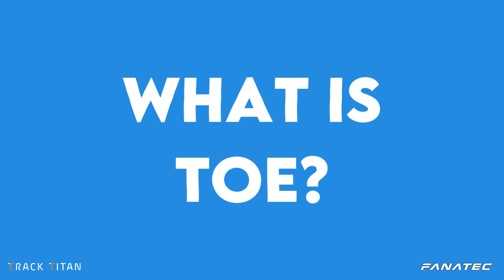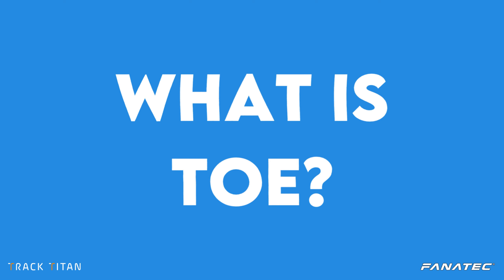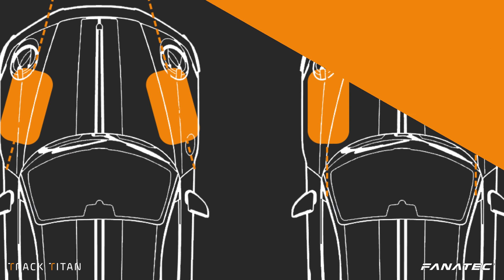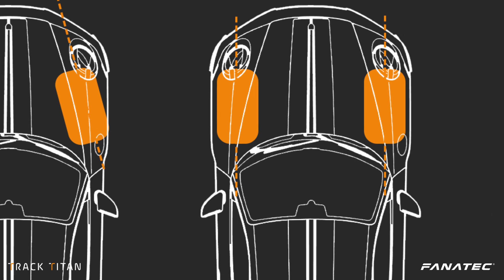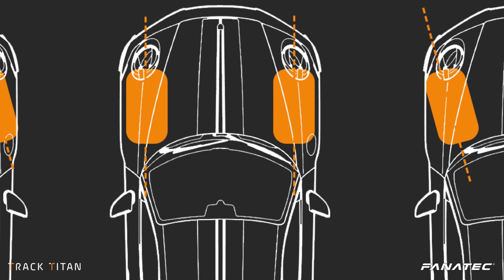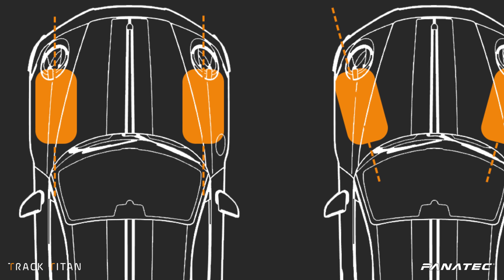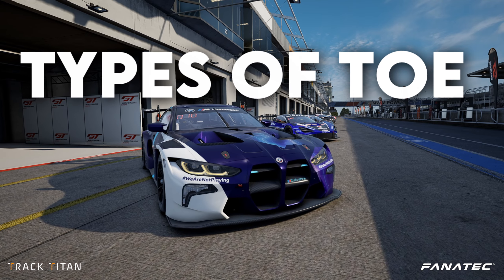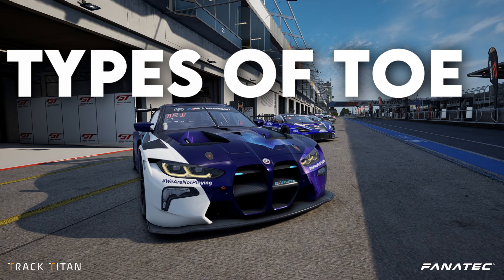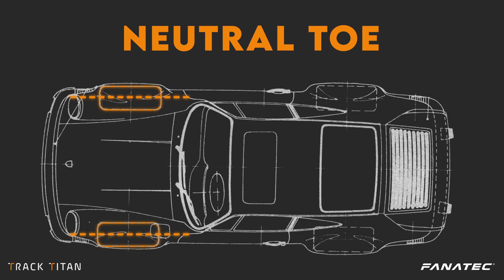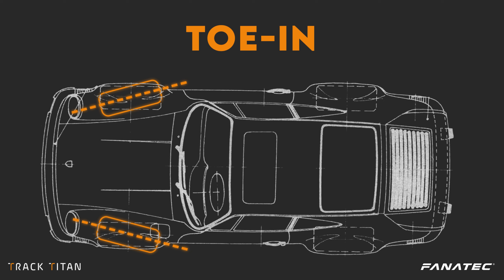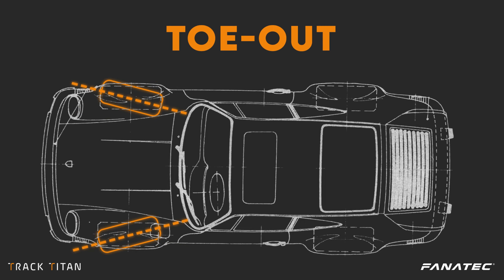Let's get this elephant out of the room and talk about what toe actually is. Toe means angling the wheels, and you can see the difference in toe settings when you view your wheels from above. A car has three different types of toe: if the wheels are parallel to each other we call it neutral toe, if the front of the wheels are pointing inward we call it toe in, and when they're pointing outward we call it toe out.